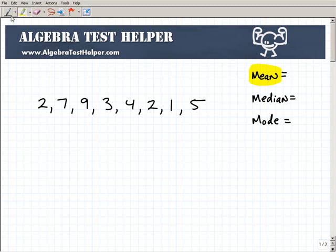What is the mean? The mean is nothing more than the average. So how do you find the average of all these numbers? All you have to do is add them up. If you add all these up, you're going to get 33.